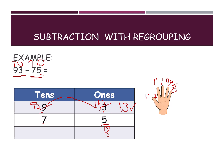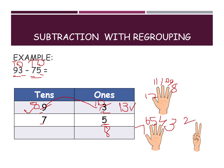Now in the tens place, the numbers are 8 and 7. Keep 8 in your mind and open 7 fingers, counting backward: 7, 6, 5, 4, 3, 2, 1. So 8 minus 7 equals 1. The final answer is 1 and 8 — 18. So 93 minus 75 equals 18.